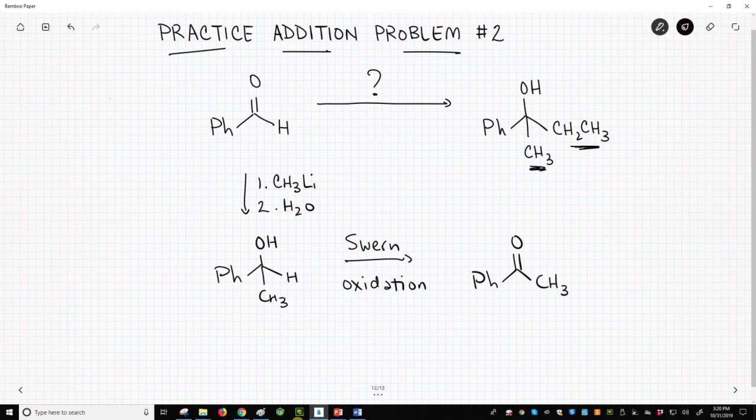We'll perform a nucleophilic addition with an ethyl organometallic, ethyl magnesium bromide. Let's use the Grignard this time. Followed by water in a second step to give our final desired alcohol.